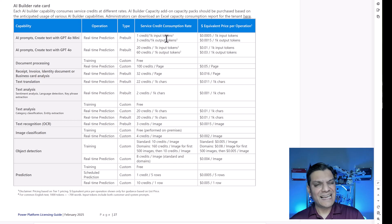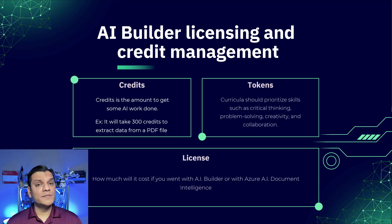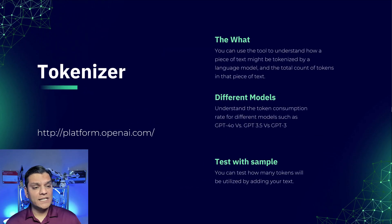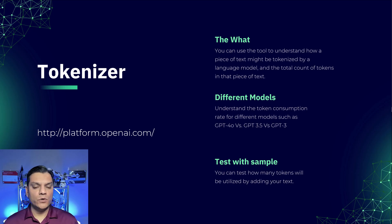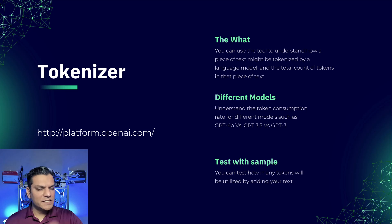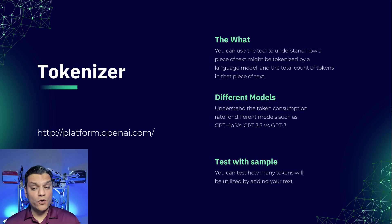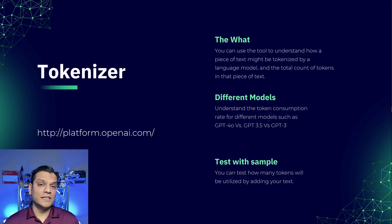Now I want to double-click on the concept of tokens and how they break down into actual words. There's a third-party website, openai.com, with a section called Tokenizer. It's a tool to help you understand how pieces of text get tokenized based on the language model you're using. You can understand how the total token count works for specific text, and we'll see a demo of that.